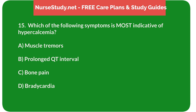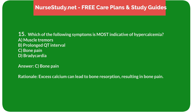Question 15: Which of the following symptoms is most indicative of hypercalcemia? A. Muscle tremors. B. Prolonged QT interval. C. Bone pain. D. Bradycardia. Answer: C. Bone pain. Rationale: Excess calcium can lead to bone resorption, resulting in bone pain.